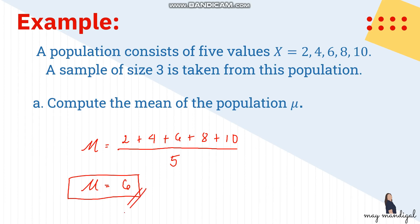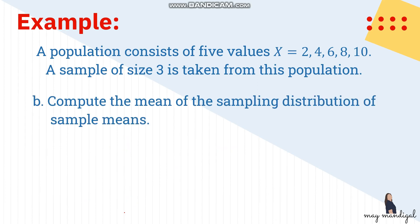This is our population mean, and we will later verify it equals the mean of the sampling distribution. Before computing the sampling distribution mean, we must construct it first. There are five values and a sample size of 3, so we use combination: C(5,3) = 10. There are 10 possible samples.